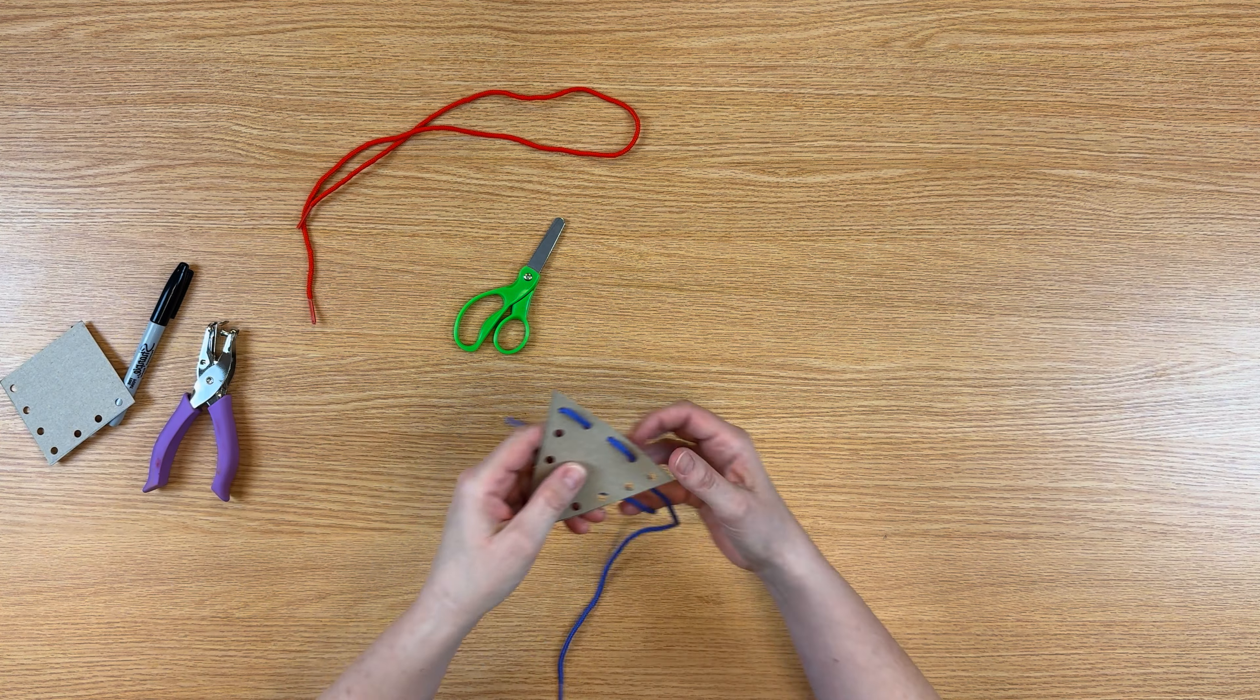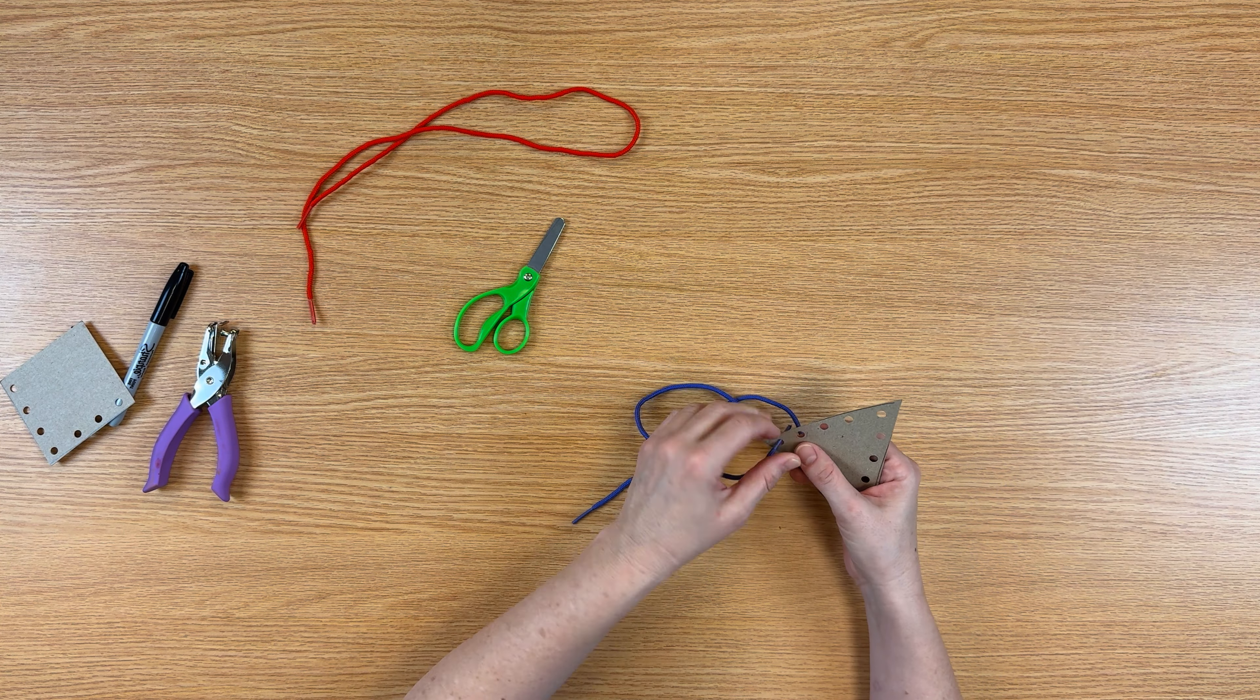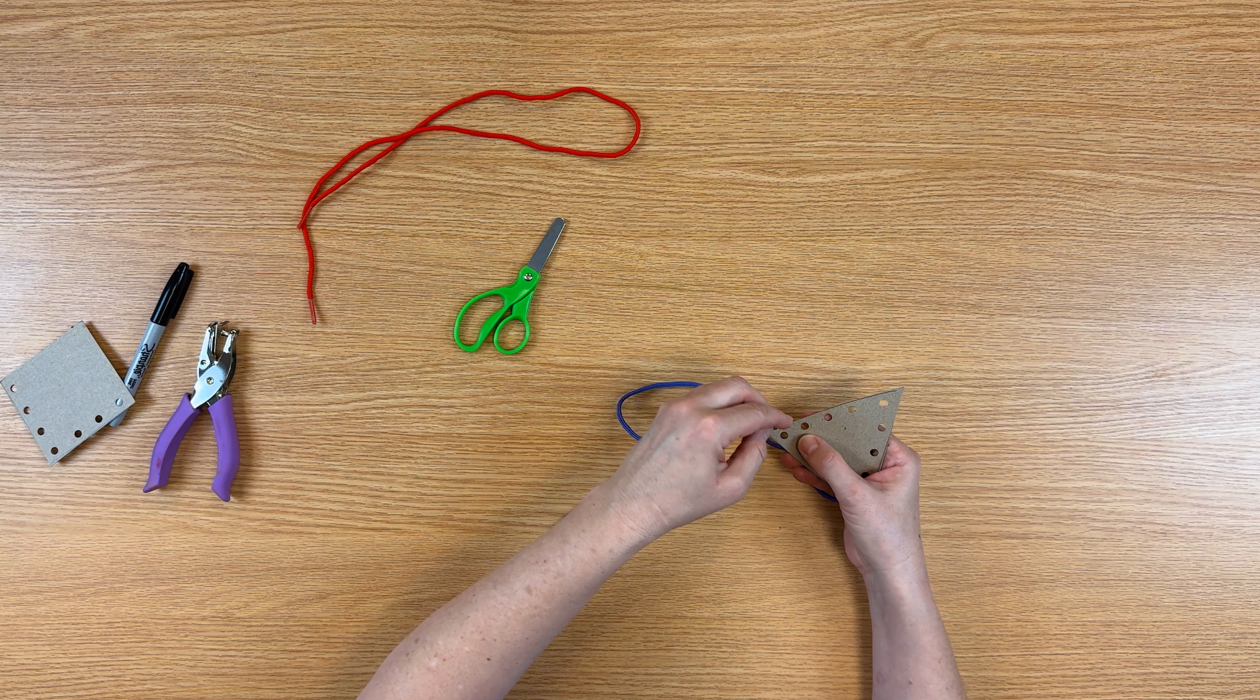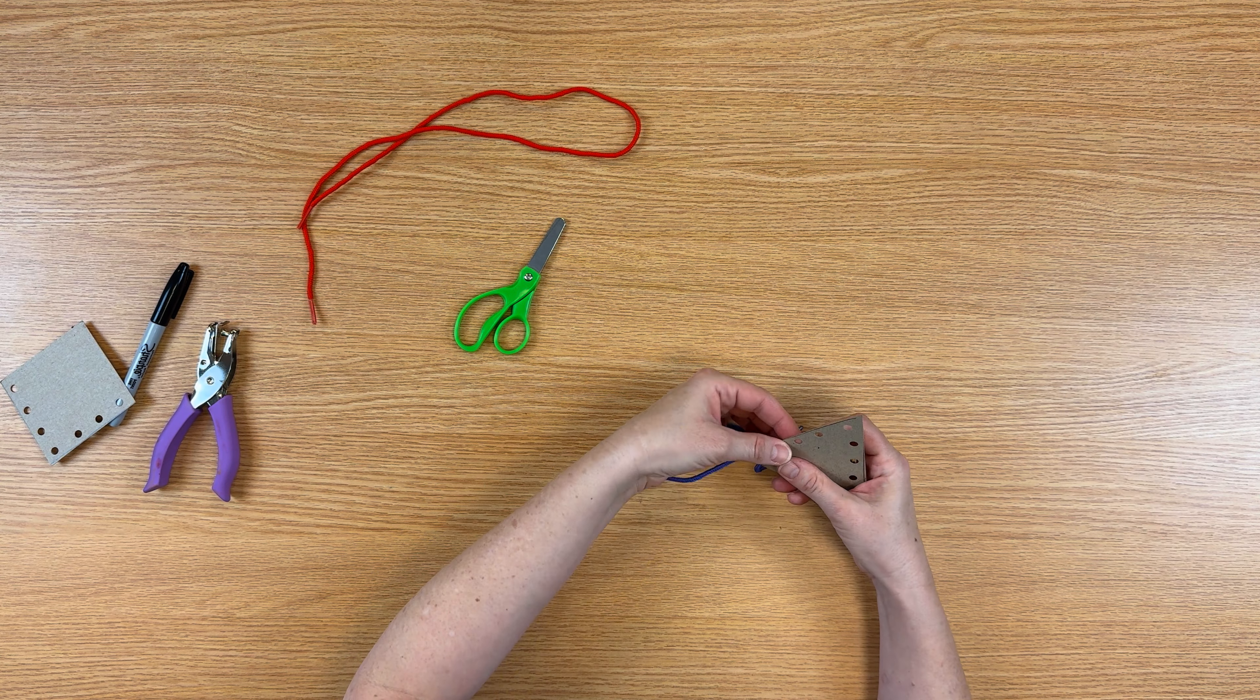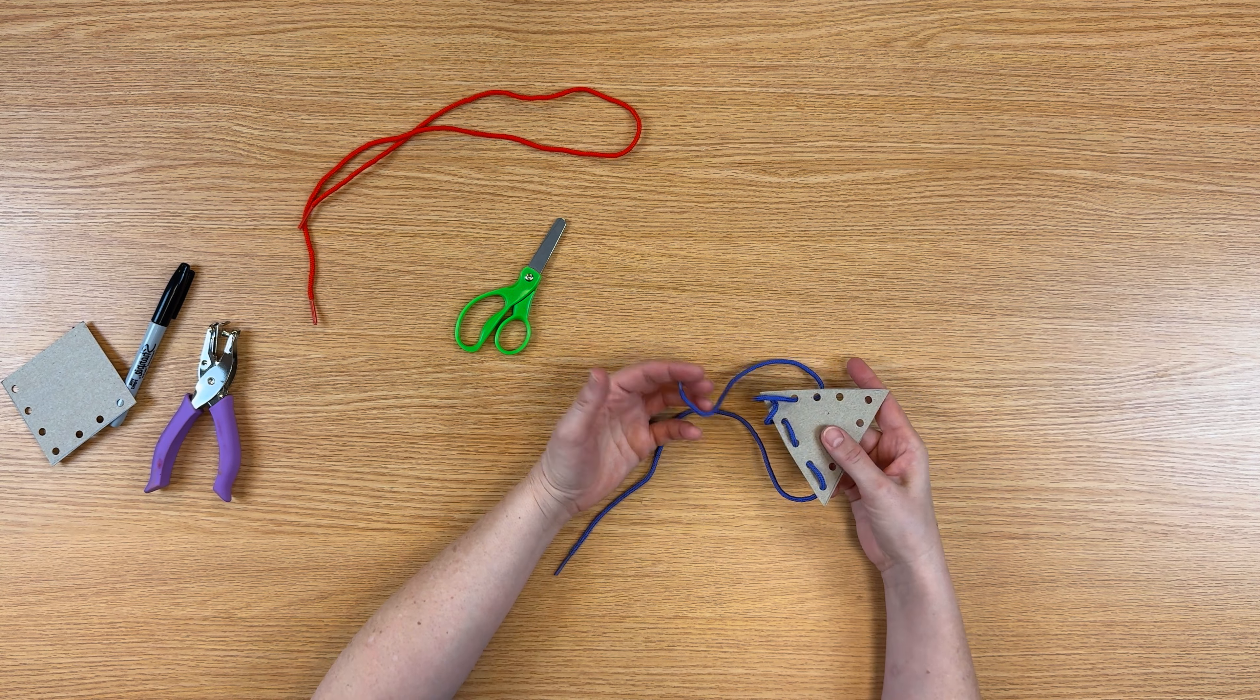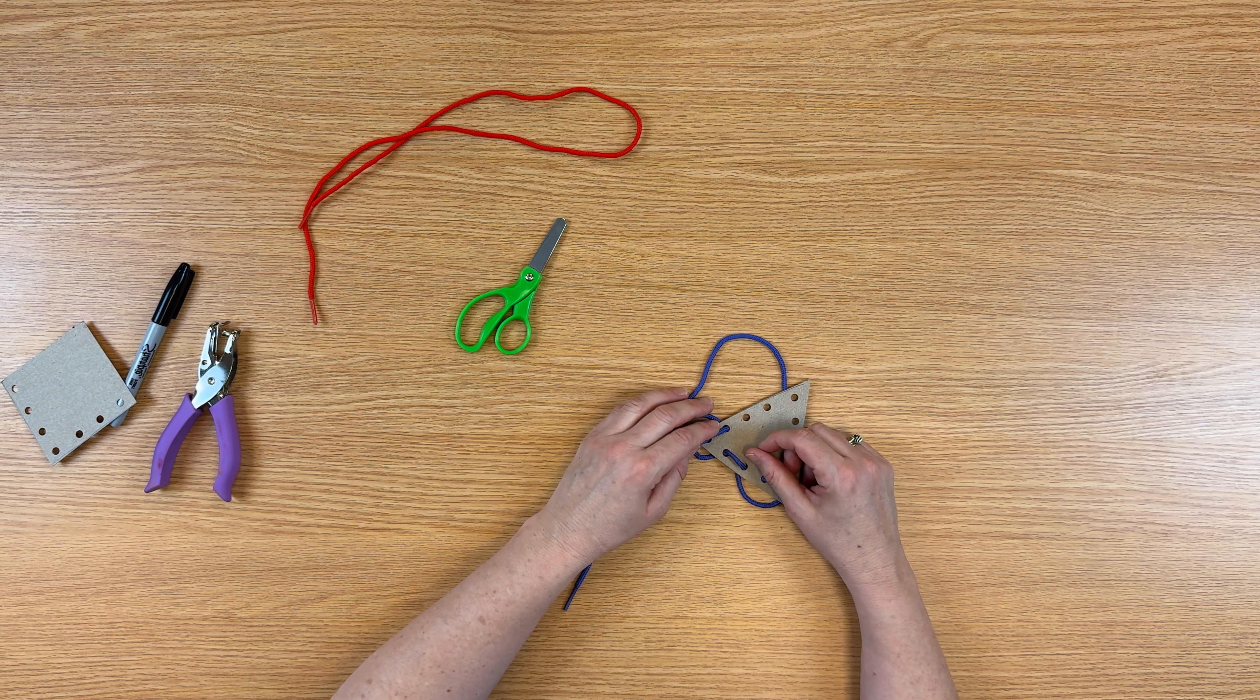Once you have everything punched out, give them the yarn or the shoelace and have them try threading the shoelace through the holes. Then you can keep going making different kinds of shapes or you can have them decorate the shapes that you've already cut out. That's all there is to it.